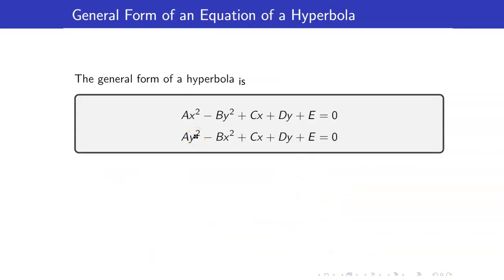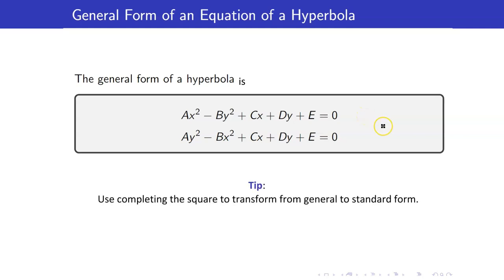Here is the general form of the equation of a hyperbola. The only difference from the equation of an ellipse is that the sign of the coefficients of X² and Y² will always be different — one will be positive and one will be negative. If given the general equation, we use completing the square to transform it into standard form to determine the center and values of A, B, and C.